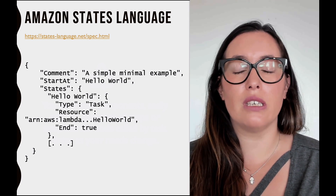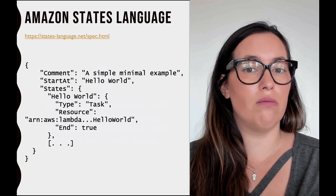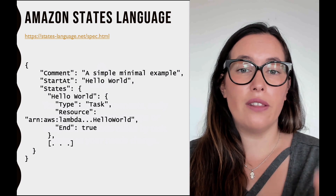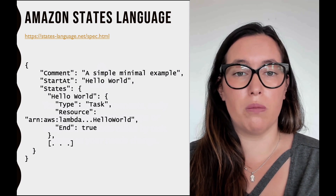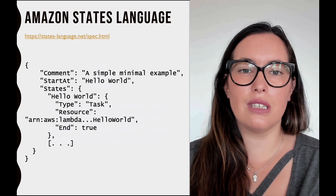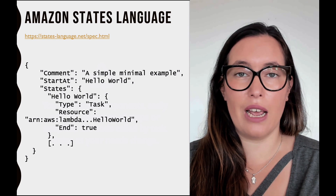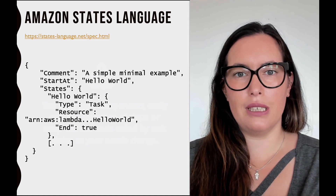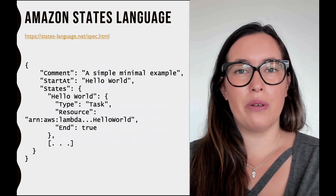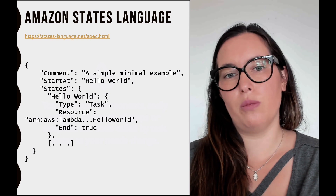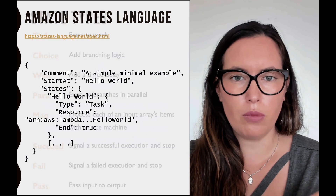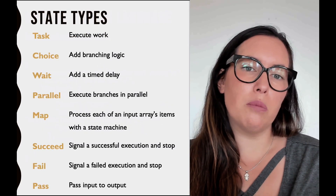Another important thing: the state machine in step functions is defined with Amazon States Language. It's a quite simple JSON definition for a state machine. I will not get into details in this video — there are links in the description box where you can check out what the Amazon States Language offers. You will see that it's pretty easy to get started, and in the next video where we are going to build and deploy a state machine, we will use some tools that can help you when developing this.